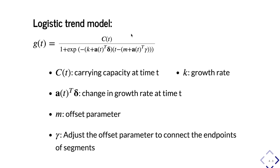Combining those two different changes, our final logistic trend model looks like this. C(t) is the carrying capacity at time t, k is the growth rate, a(t) transpose delta is the changing growth rate at time t, and M is the offset parameter. Gamma is calculated based on the other parameters to adjust the offset parameter to connect the endpoints of segments so that the function is smooth.